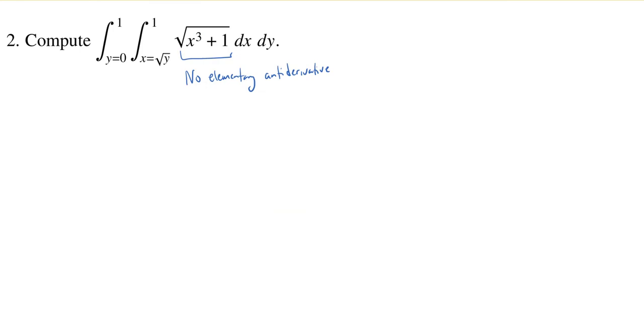So one of the techniques we learned in class is that if you have some function and you don't really want to integrate it, but we're working inside of an iterated double integral, we might try to switch the order of integration. And sometimes that can be very helpful. So let's try that here.